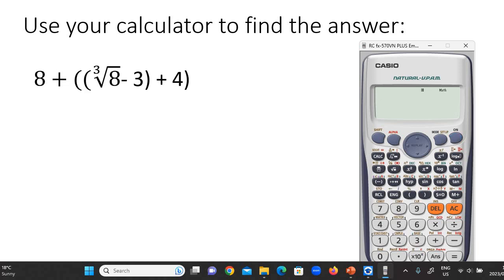So this one looks a bit interesting, but just type it as you see. It says 8 + ((³√8 - 3) + 4). Then there's two brackets. So I make two brackets. Then there's the three on the outside with an eight. So you're not going to press the square root button, which is this one over here. I'm just tapping it a few times so you can see.